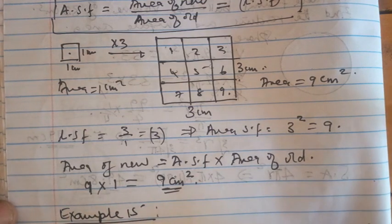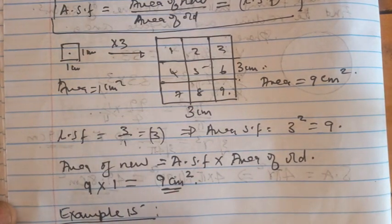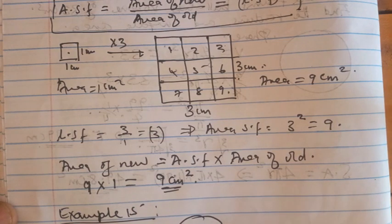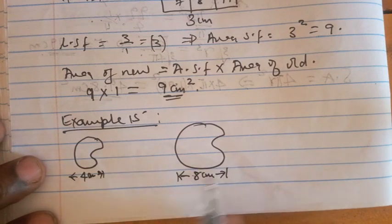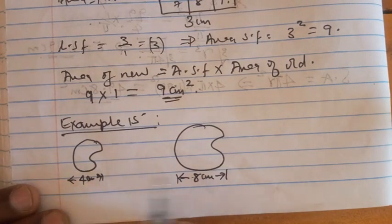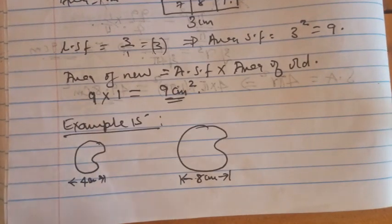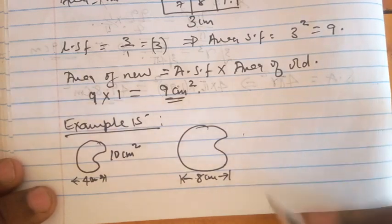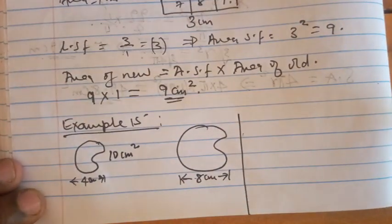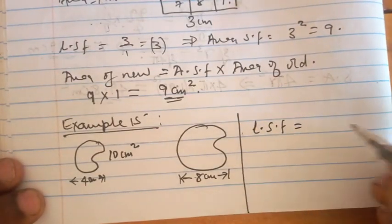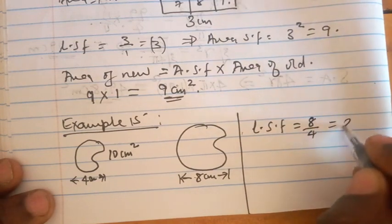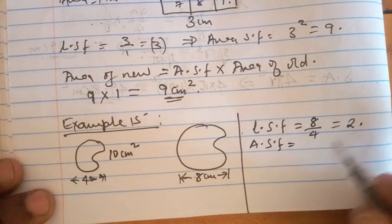Let's look at Example 15. Two similar shapes are shown: shape A with a corresponding length of four centimeters, and shape B with a corresponding length of eight centimeters. The area of shape A is 10 centimeters squared; find the area of shape B. The linear scale factor is eight over four, which is two. The area scale factor is the linear scale factor squared — two squared — which is four.